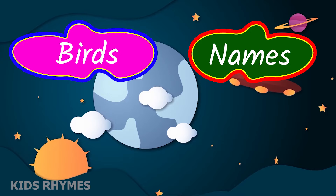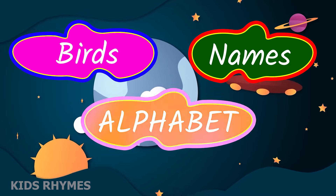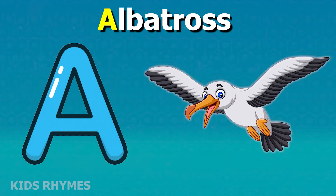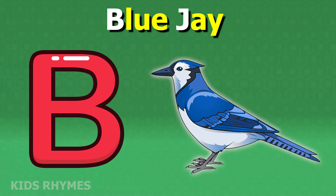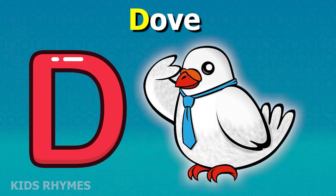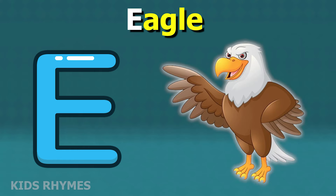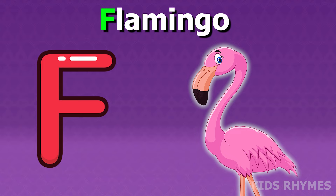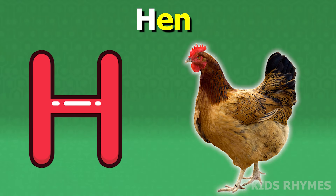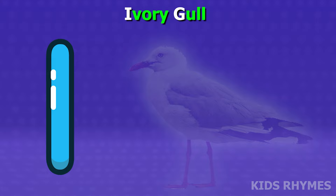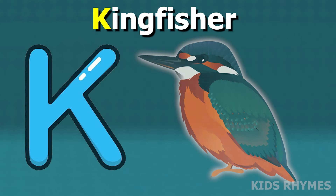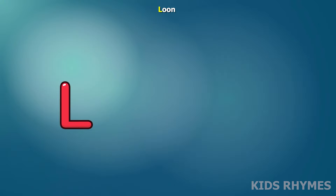Bird's name according to alphabet: A for Albatross, B for Blue Jay, C for Crow, D for Duck, E for Eagle, F for Flamingo, G for Goose, H for Hen, I for Ibis, J for Jay, K for Kingfisher.